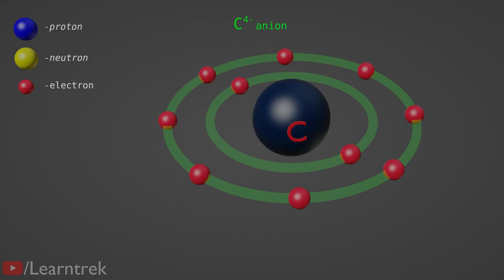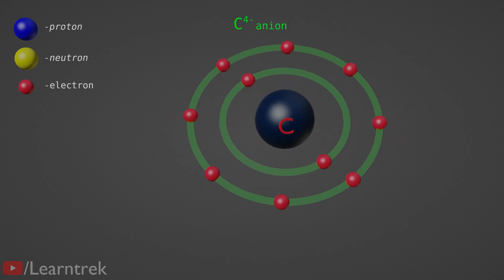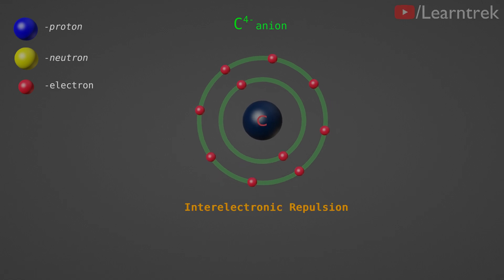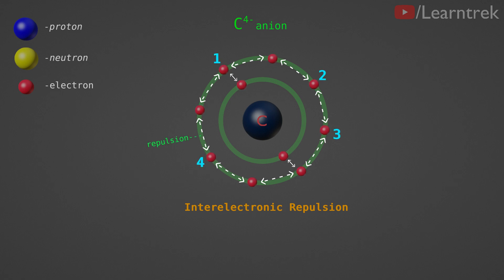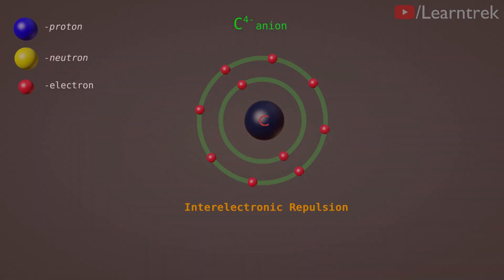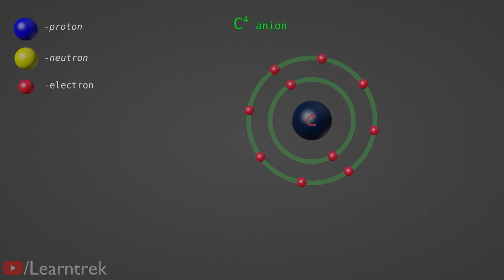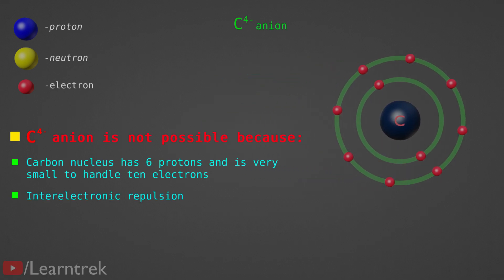Another reason for instability in the C4- anion is inter-electronic repulsion — the repulsion between electrons, which increases after gaining 4 electrons. This increase in inter-electronic repulsion makes the C4- anion unstable and unable to hold 10 electrons. Because of these two reasons, the carbon C4- anion is not possible.